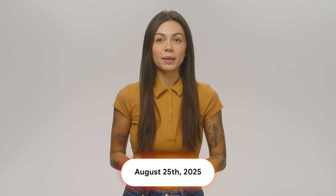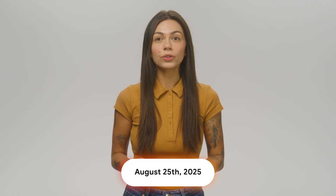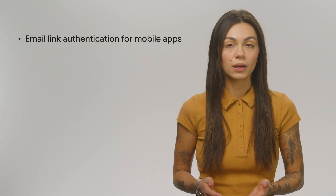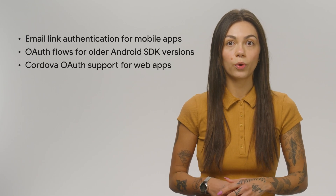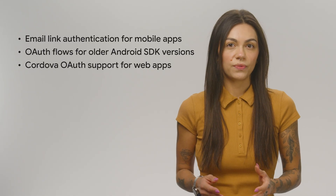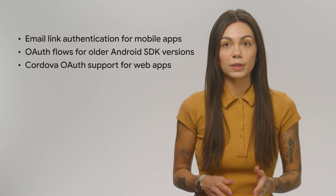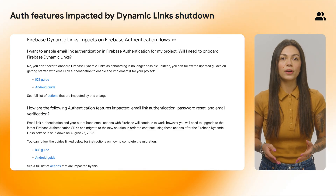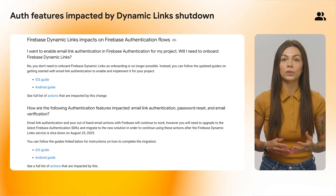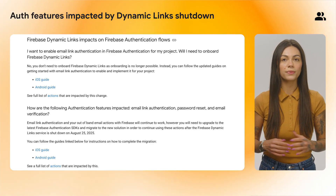Moving on, we've got an important update regarding Firebase Authentication and Dynamic Links. As you might know, Firebase Dynamic Links is shutting down on August 25th, 2025. This will affect a few Firebase Authentication features — specifically email link authentication for mobile apps, OAuth flows for older Android SDK versions, and Cordova OAuth support for web apps. To keep using these features after the shutdown, all you need to do is migrate to a newer SDK version and follow a few extra steps. We've put together a migration guide with detailed instructions to make this transition as smooth as possible. The link's available in the description.